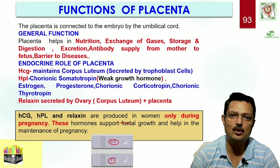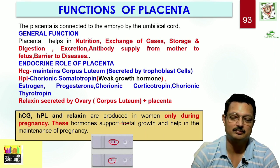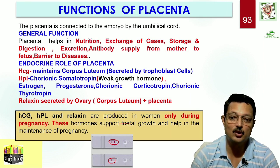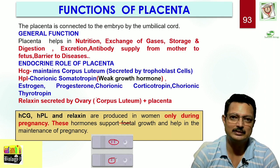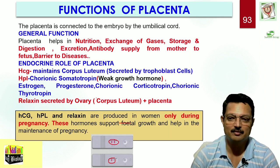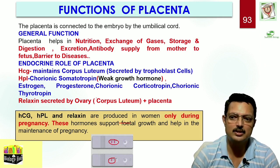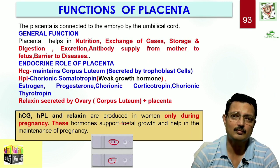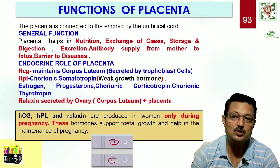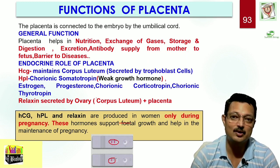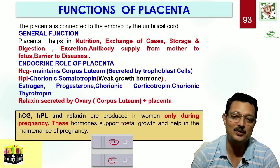Apart from HCG, the placenta also secretes HPL — human placental lactogen, also called chorionic somatotropin — which is a weak growth hormone that promotes growth of the fetus. The placenta also secretes hormones like estrogen, progesterone, chorionic corticotropin, and chorionic thyrotropin. HCG, HPL, and relaxin are produced in women only during pregnancy. These hormones support fetal growth and help in the maintenance of pregnancy. Before these endocrine tissues are fully formed, the placenta subserves the major role as an endocrine organ.